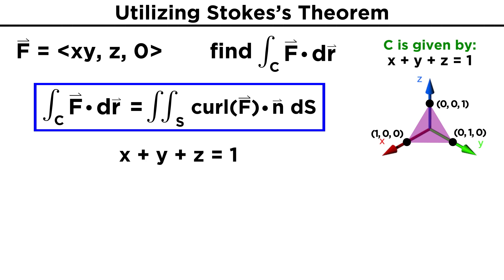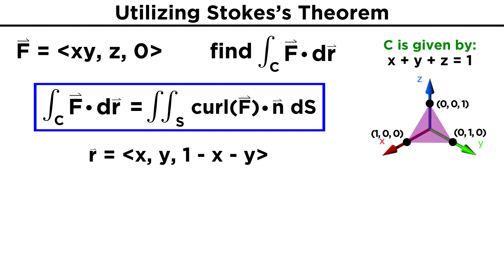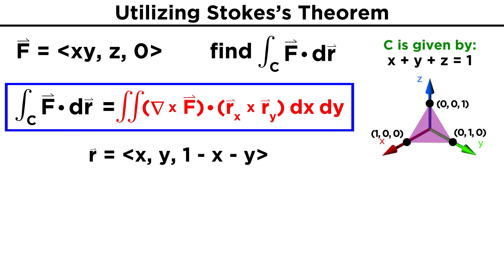With the knowledge that the plane is given by X plus Y plus Z equals one, we can solve for Z to get the parametric representation of the surface. Since Z equals one minus X minus Y, our surface can be represented by R equals (X, Y, one minus X minus Y). Now recall that when our surface has Z expressed as a function of X and Y, we can use a simplified expression. The surface integral of a vector field — in this case the curl of F dot n dS — will equal the double integral of the curl of F dot the cross product of R_x and R_y, dX dY.